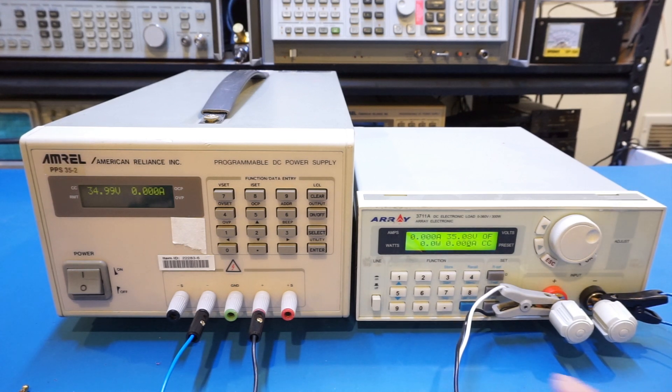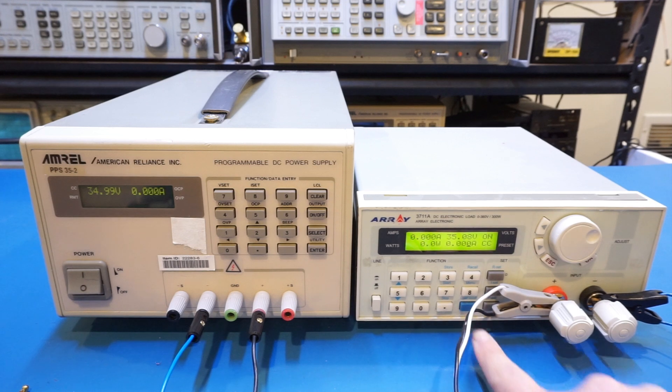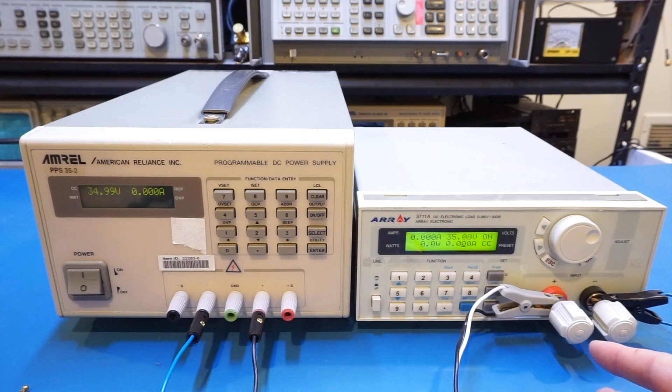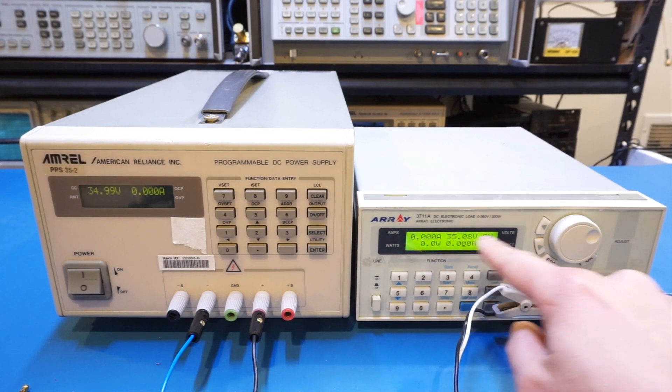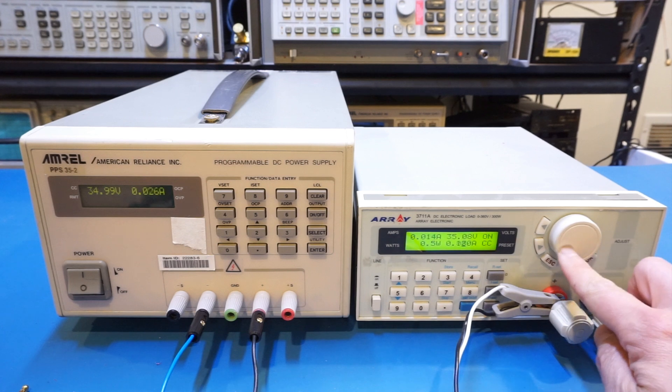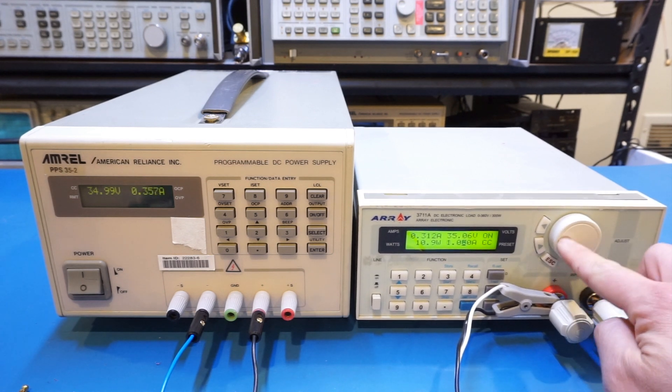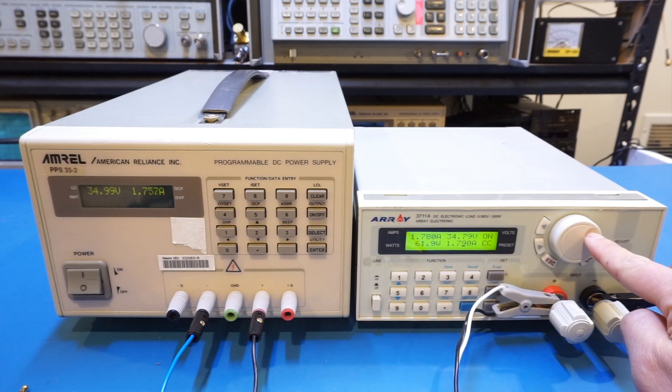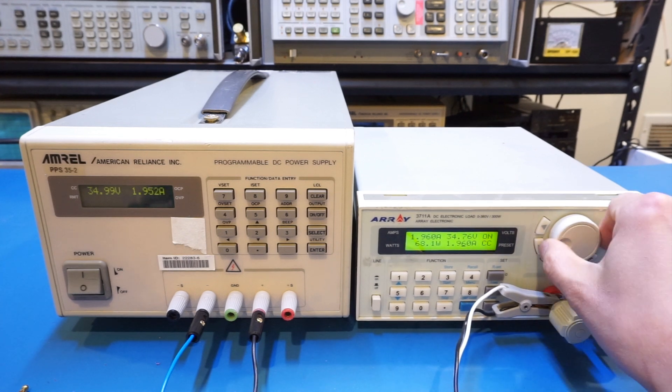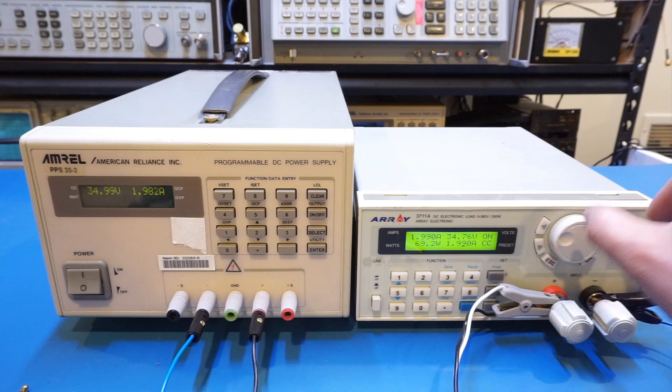Let me turn on the load and gradually increase the current draw so that we will hopefully see that the voltage at the terminal drops because of the length of the cable. You can already see that we're dropping, so I can increase the current till we hit roughly 2 amps.